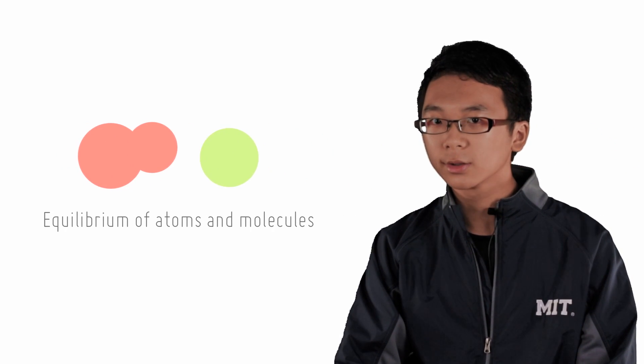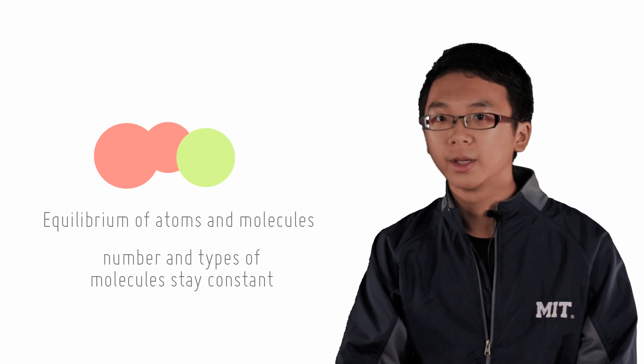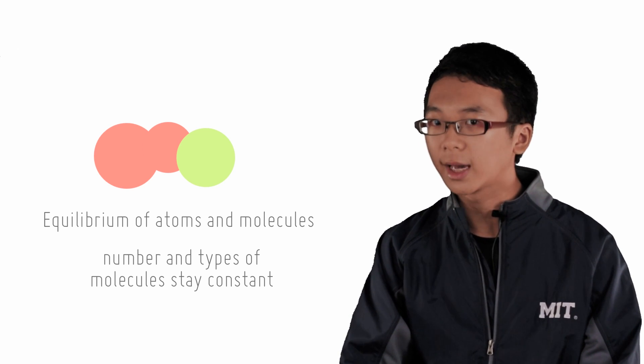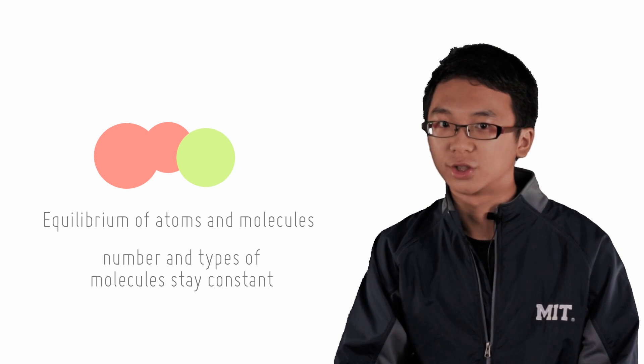When we think of equilibrium of atoms and molecules which tend to react with one another, we envision equilibrium as a state where the number and types of atoms and molecules stay constant. But that is not to say that no reactions are occurring.